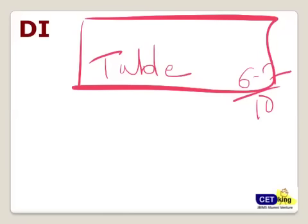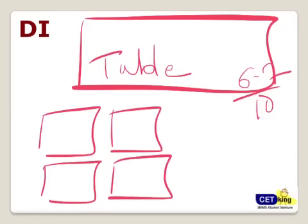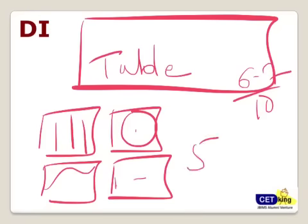Same like in verbal in RC as well. And there will be one chart which will contain multiple charts. For example, there's a bar chart along with it. There's a pie chart or a line graph with a table. And 5 questions based on that.